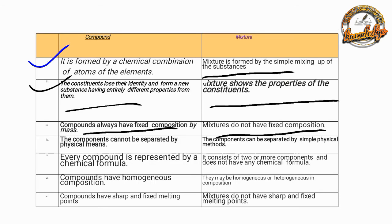The components of a mixture retain their properties and can be separated by physical means. The components can be separated by a simple physical method.